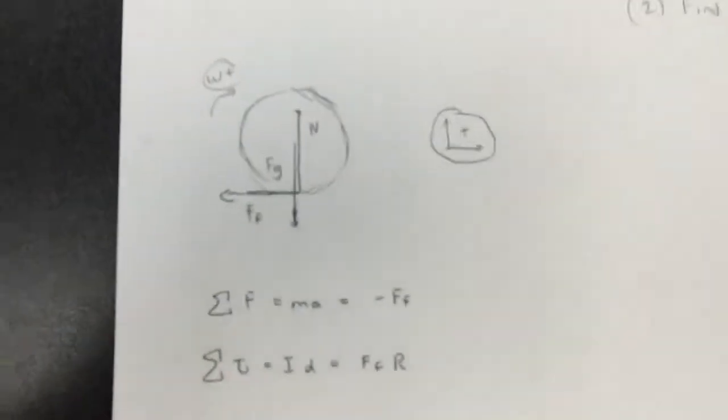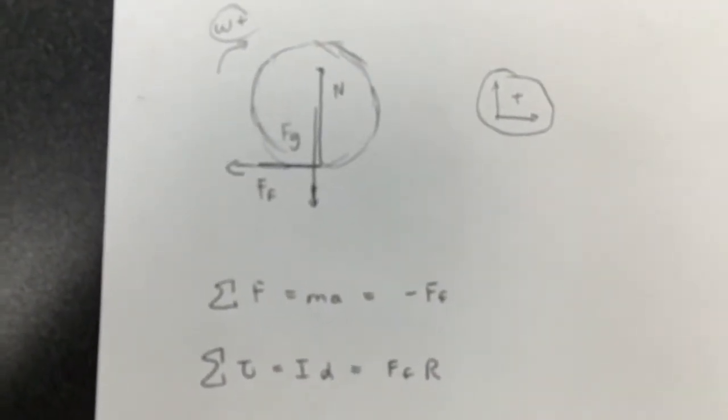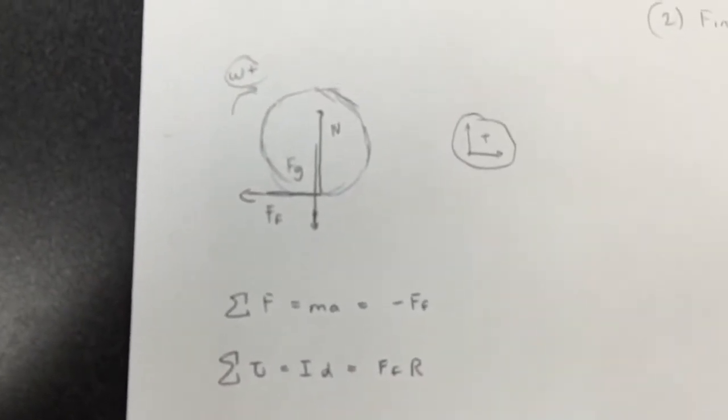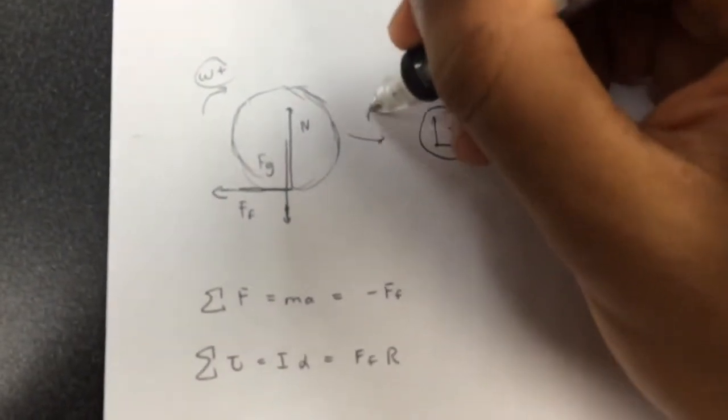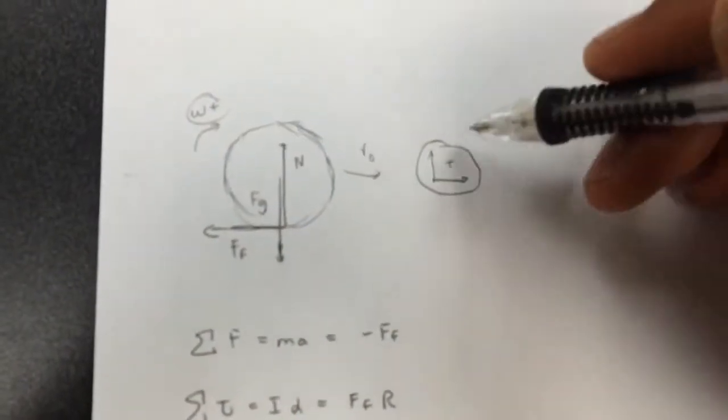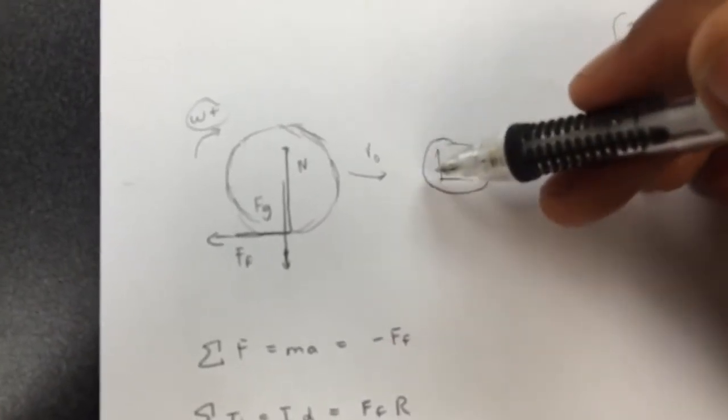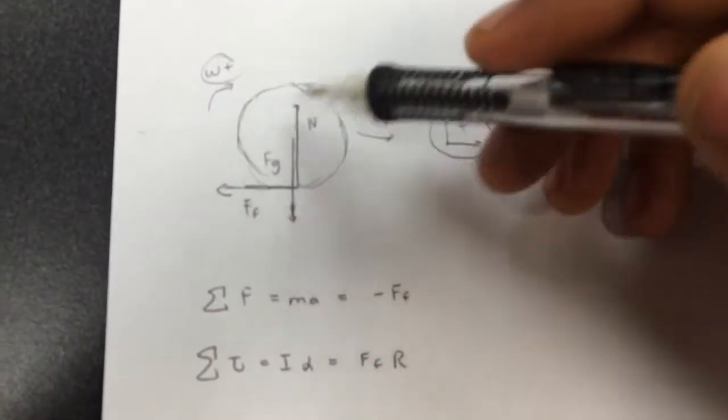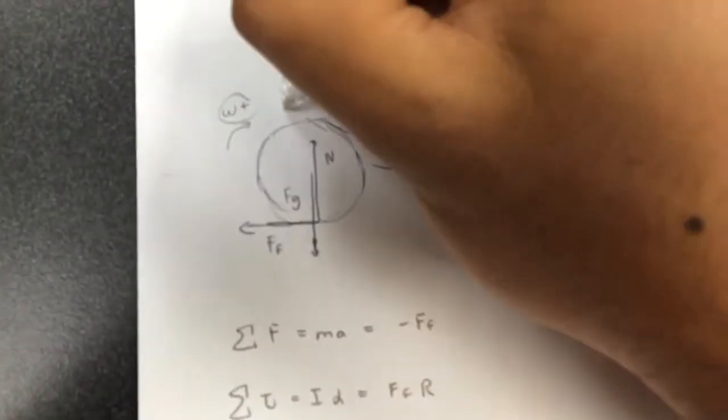So here I have a free body diagram set up for you. So the field forces acting on it are fg, and the contact forces acting on the normal force from the ground, which exactly balances fg, and the frictional force, which acts in this direction because the ball is slipping in this direction. So the frictional force opposes that motion. So I've chosen my sign convention, which is really important in this problem, to point upwards and to the right. The upwards part isn't as important as to the right. And I've defined my positive rotation to be into the page.